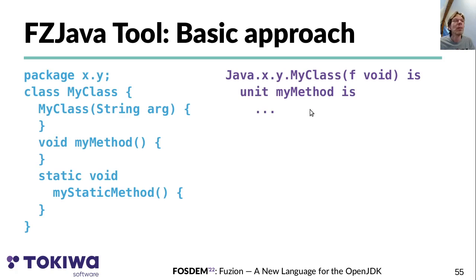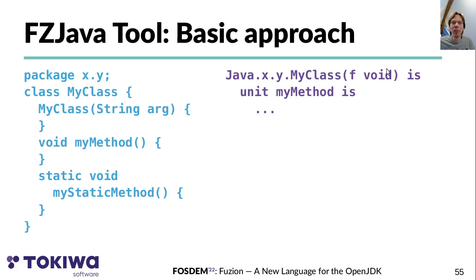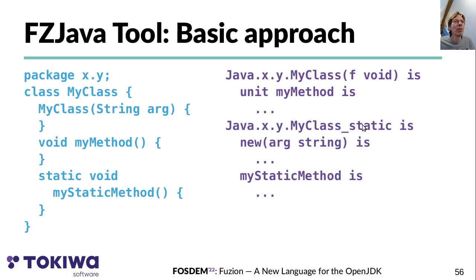Two important things: the 'void' type in Java is a unit type in Fusion, while Fusion's own 'void' type is quite different — it is a type that has no values, analogous to the type of functions like 'System.exit' that never return. The reason 'void' is used as an argument to the 'my_class' feature is to prevent developers from calling it directly: by providing a void-type argument, it becomes impossible to call this feature since there is no way to produce a void value. The only way to create instances of 'my_class' is via the constructor wrapper generated by fz_java.